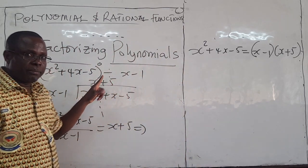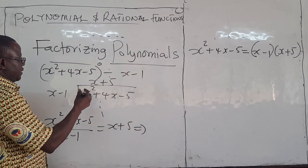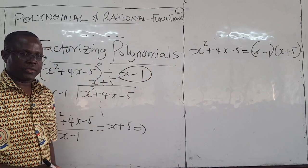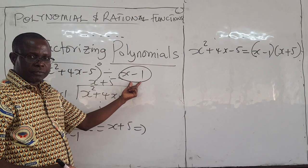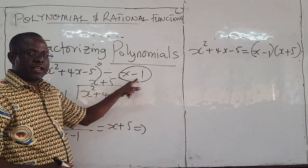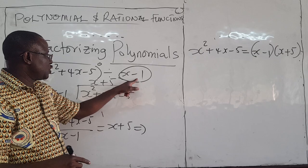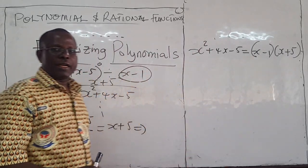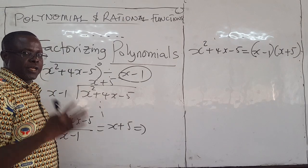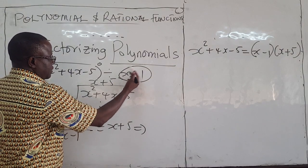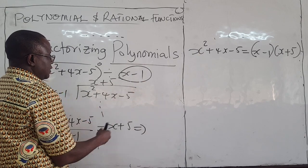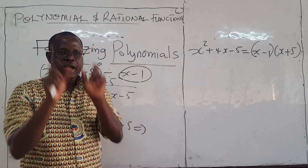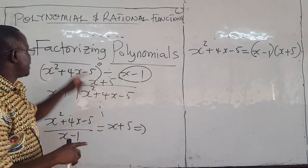In this example, you were given the polynomial and asked to divide by x minus 1, and we saw that this was a factor. The question is: suppose you are not given this divisor, and yet you want to factorize this polynomial and get these factors — how do you do that? That is the question of factorizing.